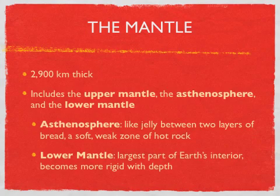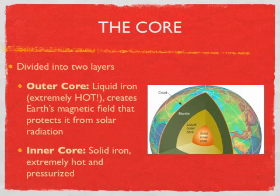The lower mantle is the largest part of the Earth's interior, and it becomes harder as you increase in depth. Now we get to the core. The core is divided into two layers: the outer core and the inner core. The outer core is extremely hot — so hot that the iron is actually liquid.